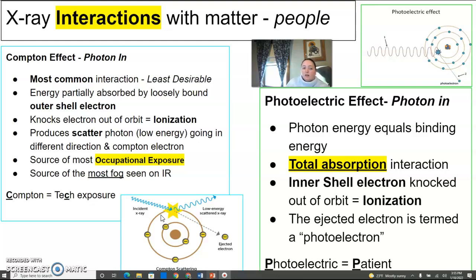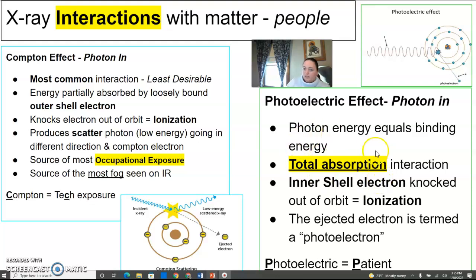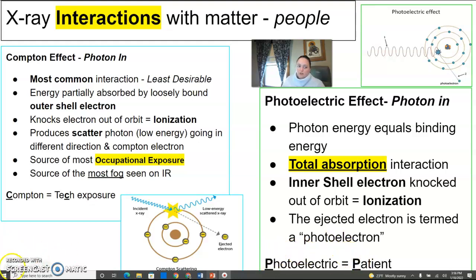The Compton effect is the source of most occupational exposure — so as a technologist, most of my exposure is from Compton. It's also the source of the most fog seen on the image receptor. I remember Compton has a C for tech exposure. Photoelectric effect is another photon in — the photon energy equals the binding energy, and there is total absorption in this interaction. The inner shell electron is knocked out of orbit, which is ionization. The ejected electron is termed a photoelectron. I use the mnemonic photoelectric patient — P to the patient.